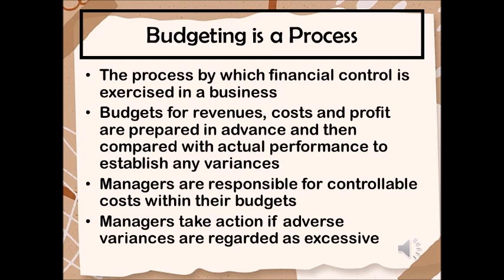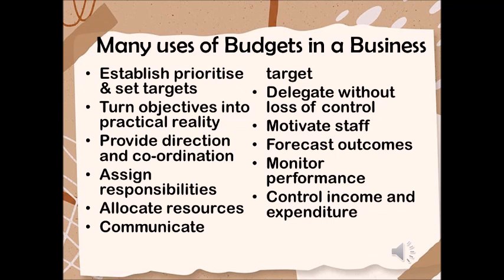What we do is establish budgets for revenues and the cost of achieving those revenues. Therefore, if we have revenues and costs, we know what the profits of the business will be. We can then compare actual performance with the budgets to establish whether anything favorable or adverse has happened — favorable variances or adverse variances. Those adverse variances are what managers particularly need to take account of and investigate as they arise. Budgeting is a widely used process in businesses because it has many uses, including providing direction and coordination, establishing priorities, allocating resources, and monitoring performance.